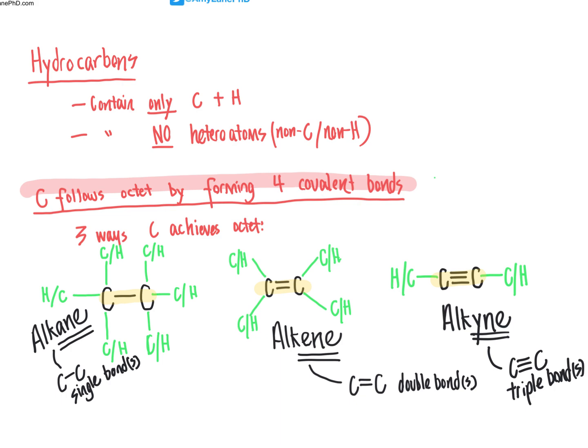Going forward, you should be comfortable looking at the structure of a molecule and recognizing whether it is an alkane — meaning all carbons are connected by single bonds — an alkene, meaning there is at least one double bond, or an alkyne with a carbon-carbon triple bond. These are all representative of hydrocarbons, which are molecules that contain only carbon and hydrogen. These are the three groups that we can place hydrocarbons into.